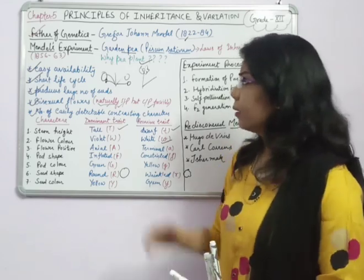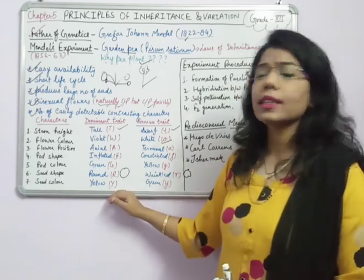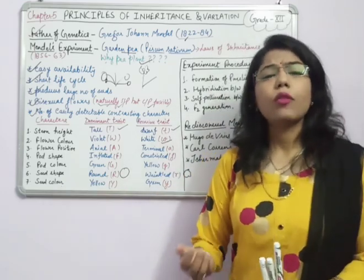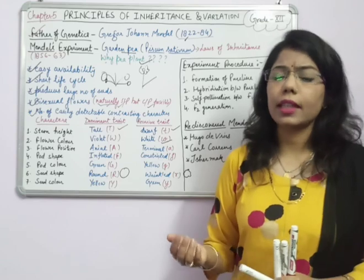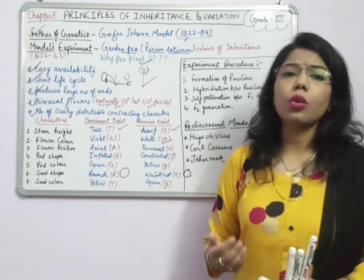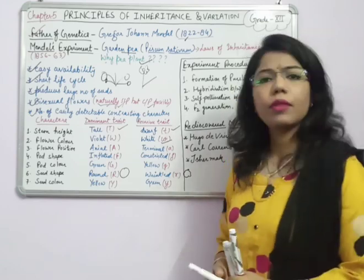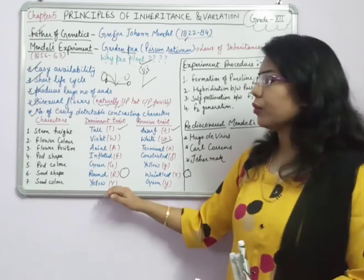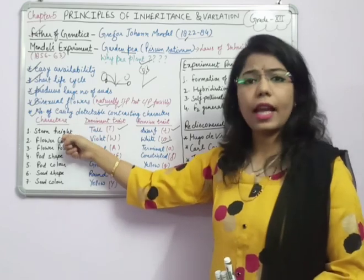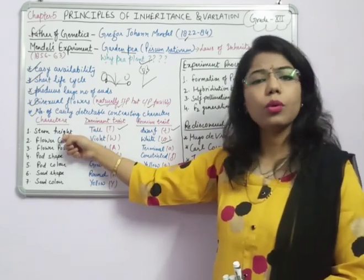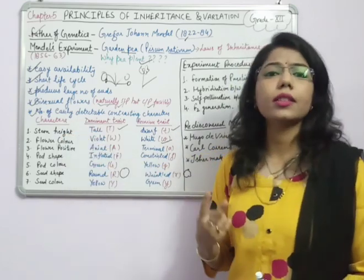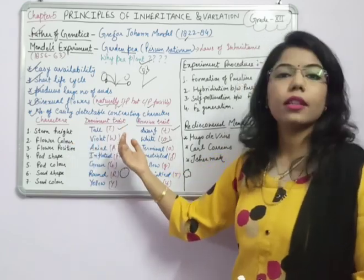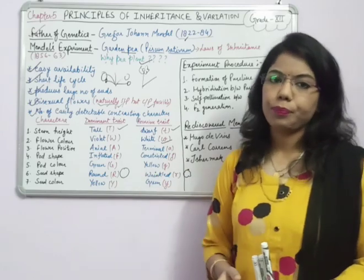In Mendel's experiment, he sometimes studied one character at a time and sometimes two or more. When studying one character at a time it is called a monohybrid cross; when studying two characters at a time it is called a dihybrid cross.